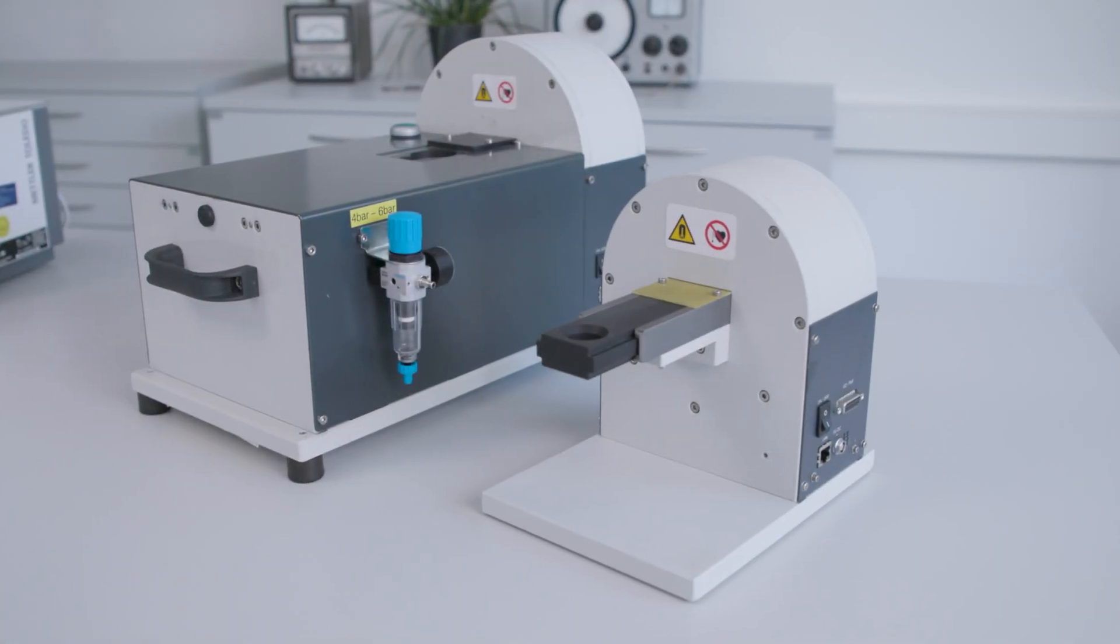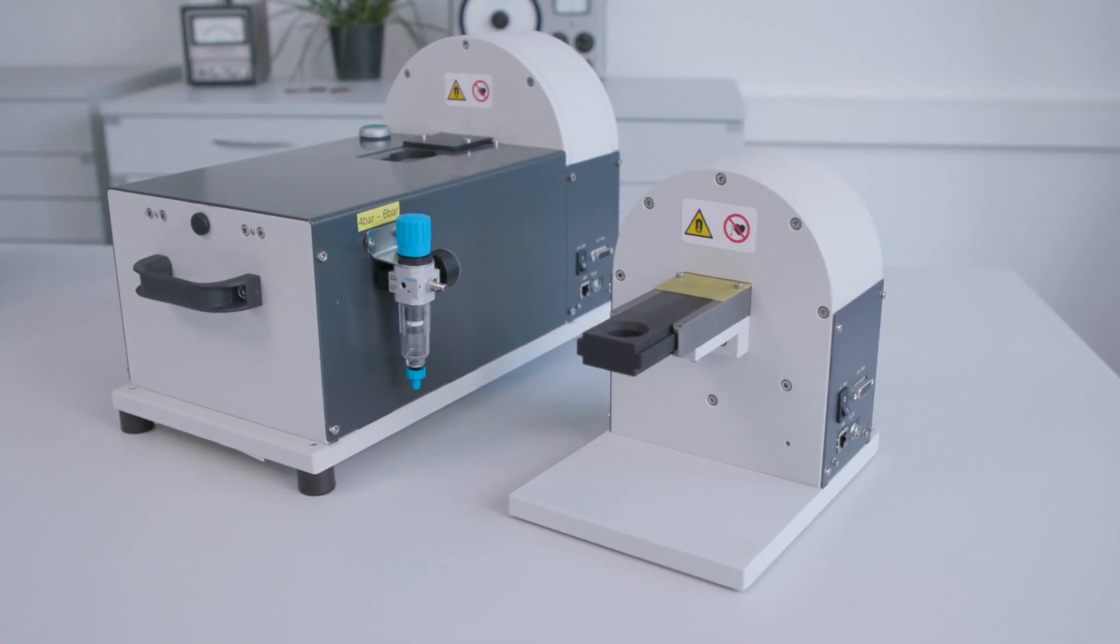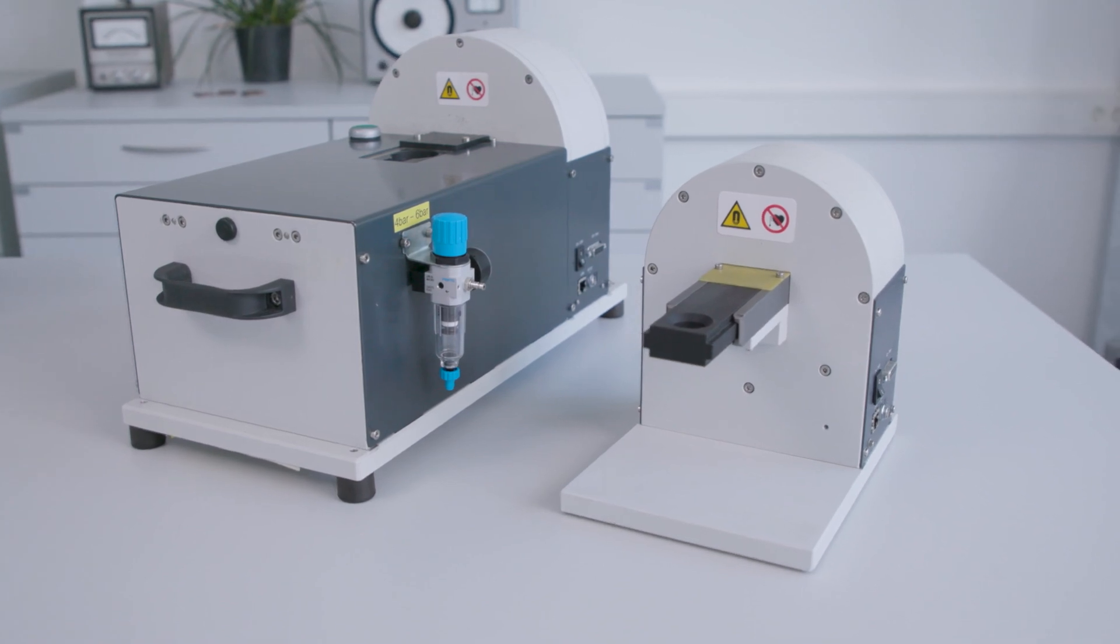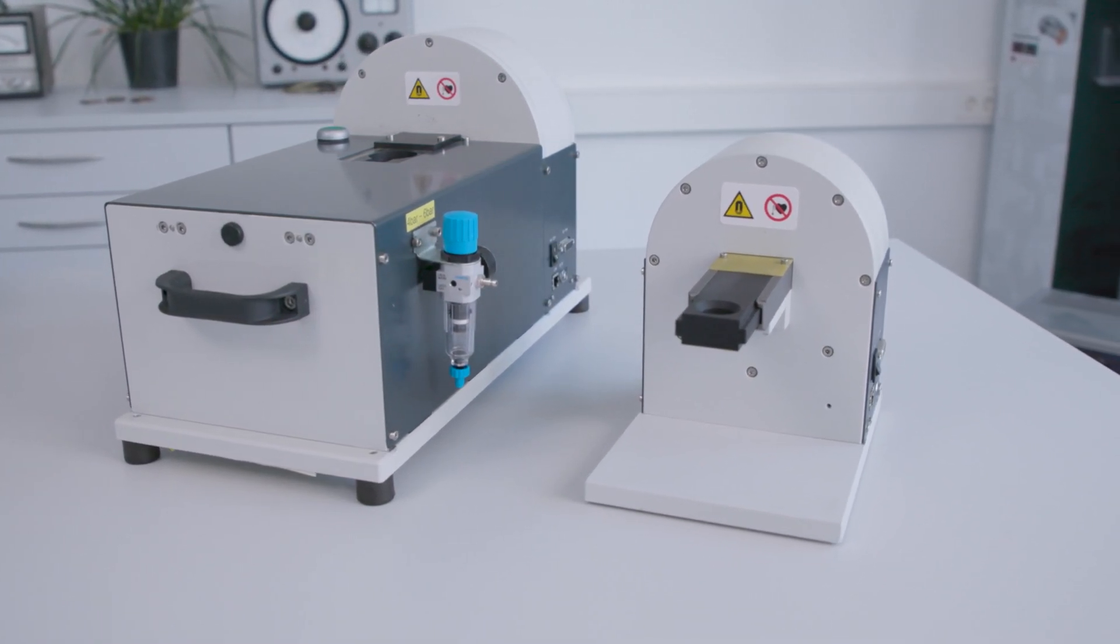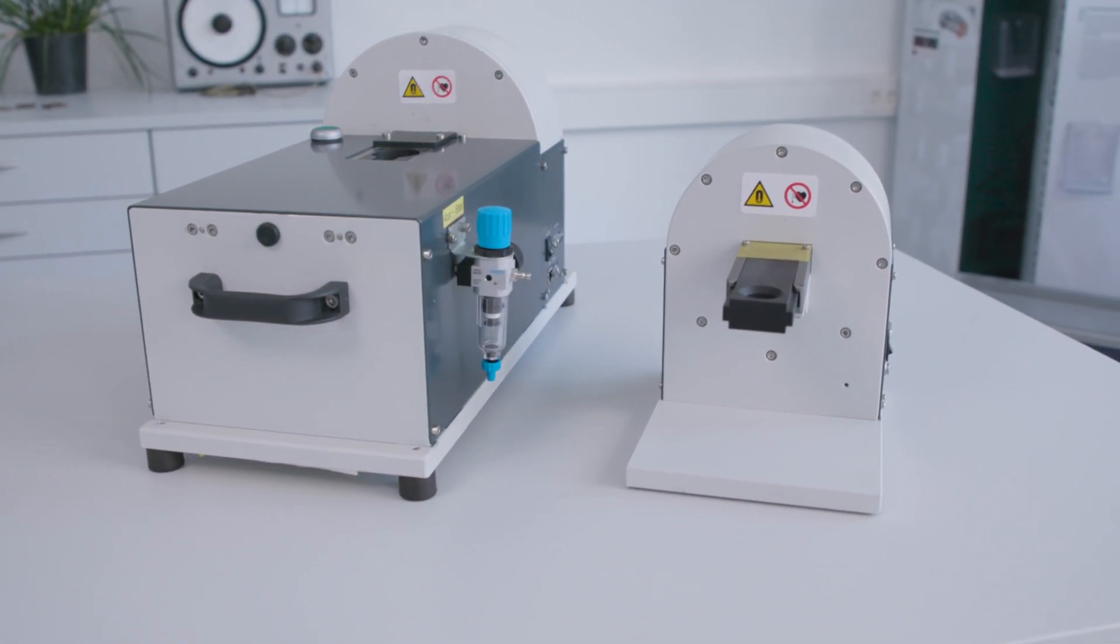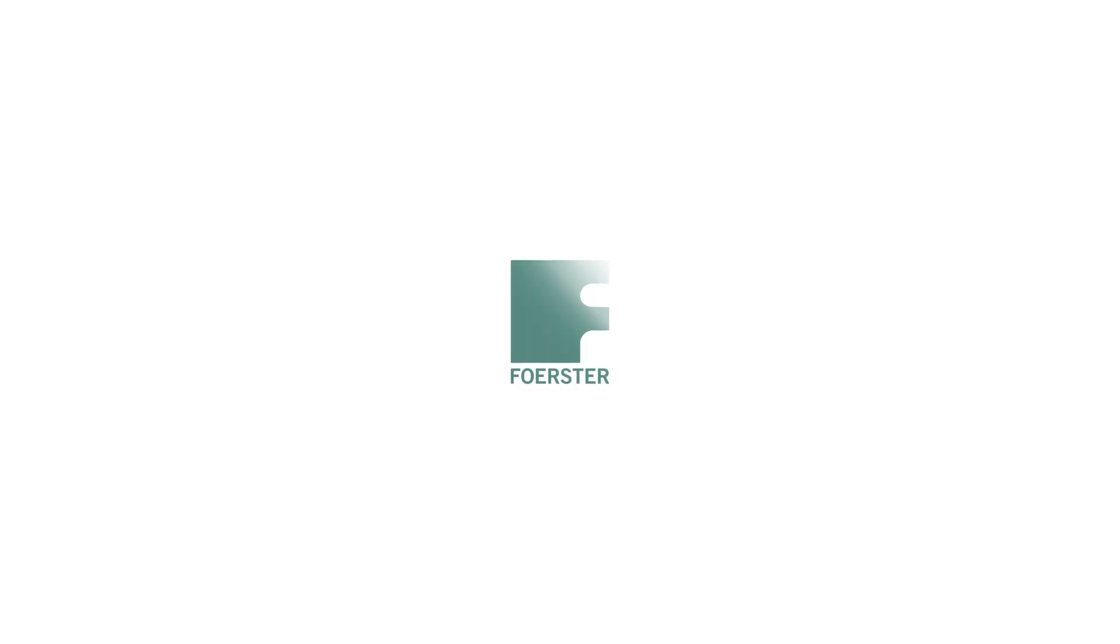For geometry-independent and precise measurement of magnetic saturation, we recommend testing our Corzomat 1097 measuring system. For further information, please visit our website at forstergroup.com.